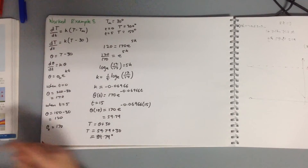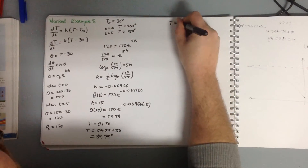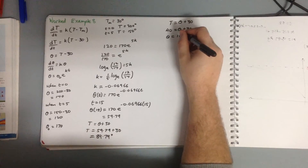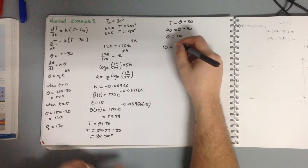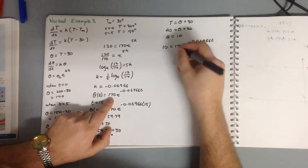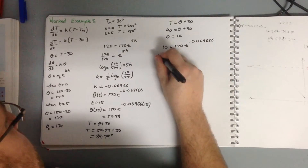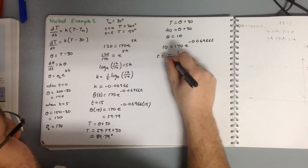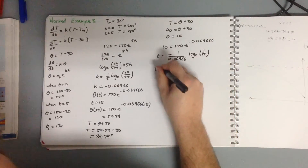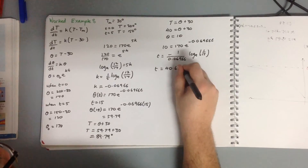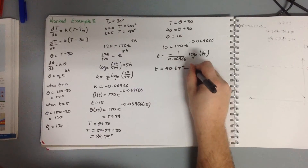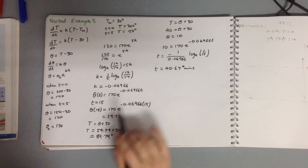For part C, how long will it take for the bowl to reach 40 degrees? Since temperature equals theta plus 30, and temperature equals 40, we get theta equals 10. Setting 10 equals 170 e to the negative 0.06966T and rearranging gives T equals negative (1/0.06966) times log base e of (1/17). Solving, T equals 40.67 minutes. So the temperature of the bowl reaches 40 degrees after 40.67 minutes.